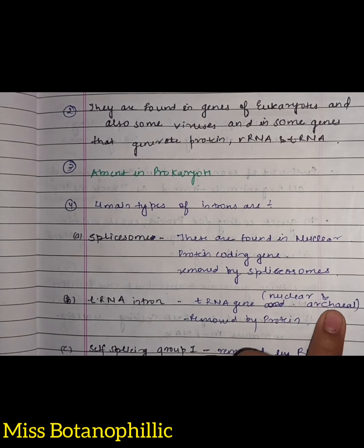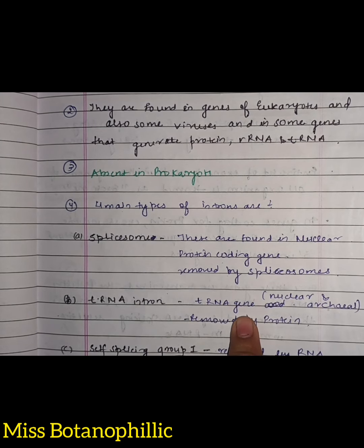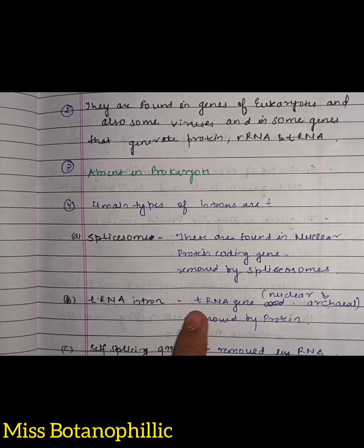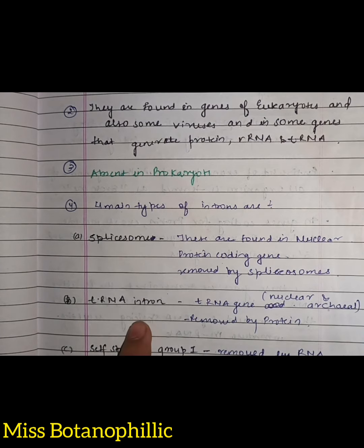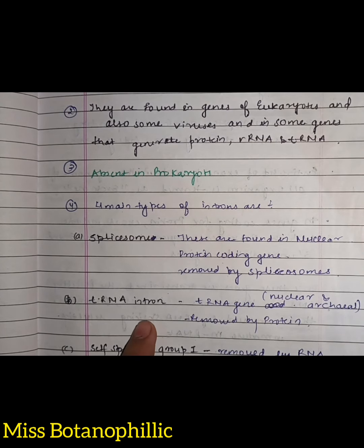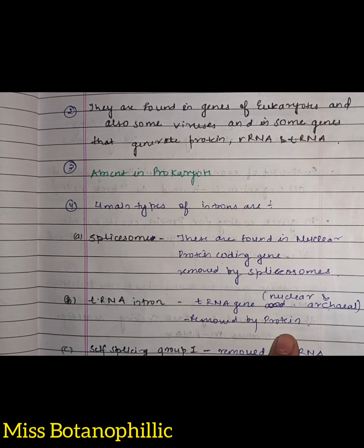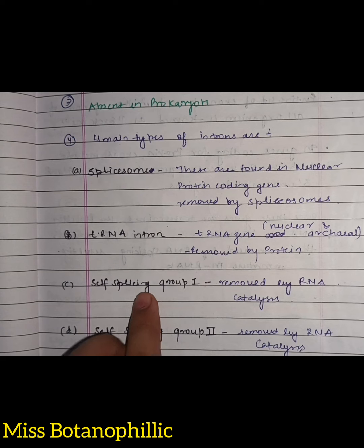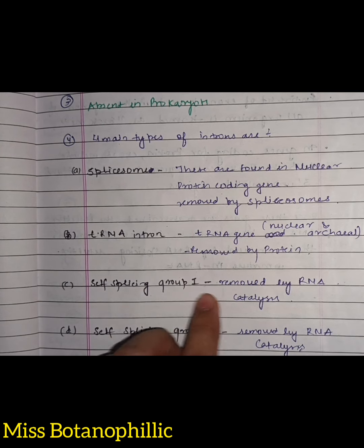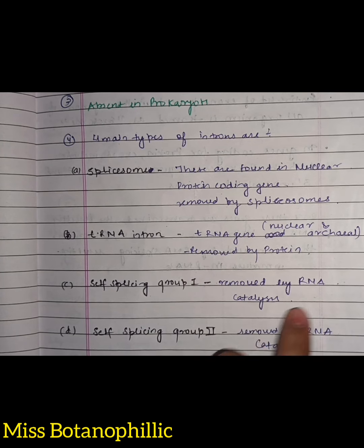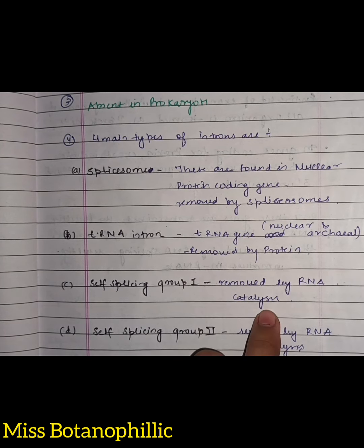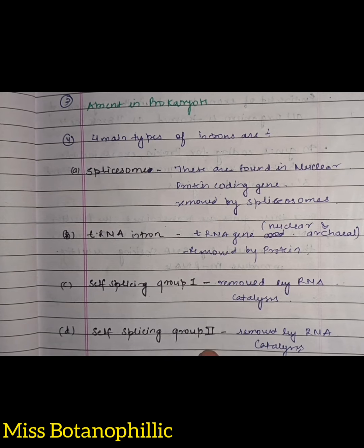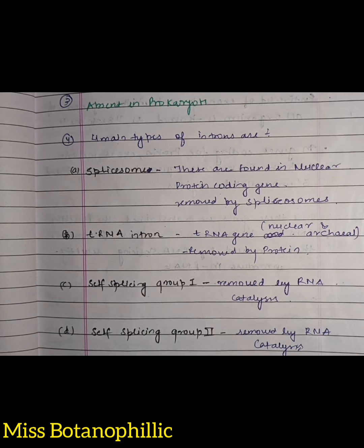The tRNA introns are found in nuclear and archaeal tRNA genes — tRNA meaning transfer RNA genes. These tRNA introns can be removed by proteins. After this, we have self-splicing group 1 introns, which can be removed by RNA catalysis, and self-splicing group 2 introns, which can also be removed by RNA catalysis.